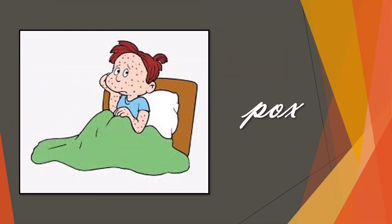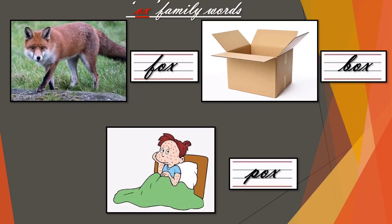Our third word of Ox family is pox. P-uh, ox — pox. So children, there are three words in the Ox family: F-ur, ox — fox; B-uh, ox — box; and P-uh, ox — pox. These are the Ox family words.